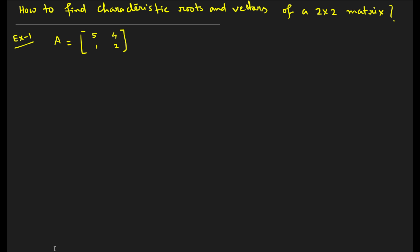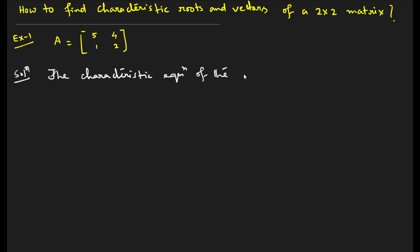Watch very carefully — it's very simple and also very important. Here we have taken a 2 by 2 matrix: first row is 5, 4 and second row is 1 and 2. To find the characteristic roots, we need to solve the characteristic equation. The characteristic equation of the given matrix is: determinant of (A minus lambda I) equals 0.